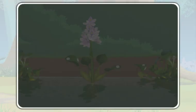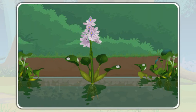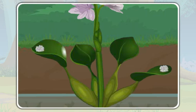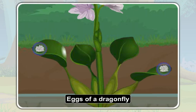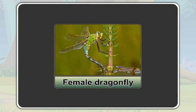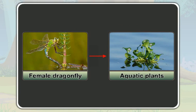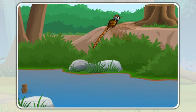This is a pond. Let's look at one of the aquatic plants. Here you see small eggs on it. These are the eggs of a dragonfly. A female dragonfly lays eggs on aquatic plants. If there are no aquatic plants in the pond, the female dragonfly lays eggs on the water.